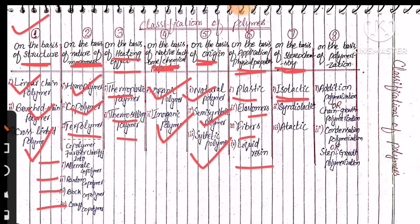The three types based on stereochemistry are: isotactic, syndiotactic, and atactic. Another name for the stereochemistry of polymers is tacticity. We can refer to this classification as either stereochemistry or tacticity of polymers.